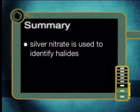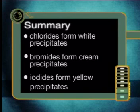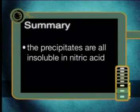Let us now summarize everything so far. Silver nitrate is used to identify halides. Chlorides form white precipitates, bromides form cream precipitates, and iodides form yellow precipitates with silver nitrate. The precipitates are all insoluble in nitric acid. So now we have developed a test to identify the presence of halide ions in solution.